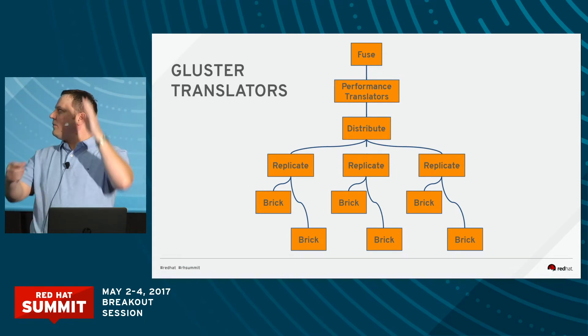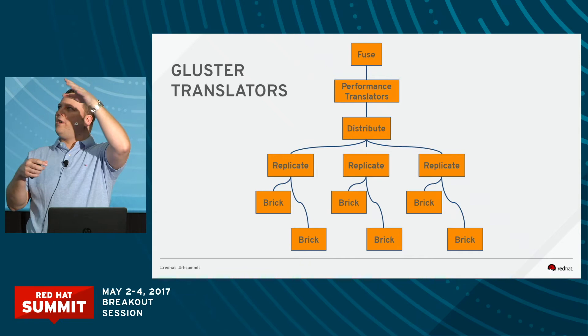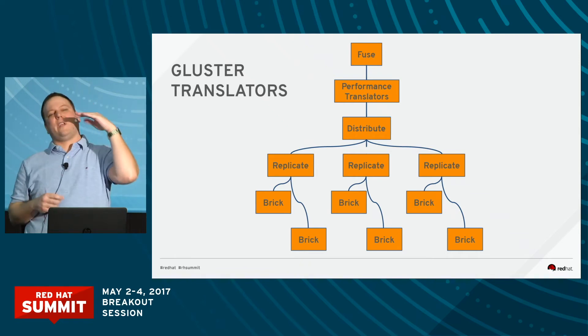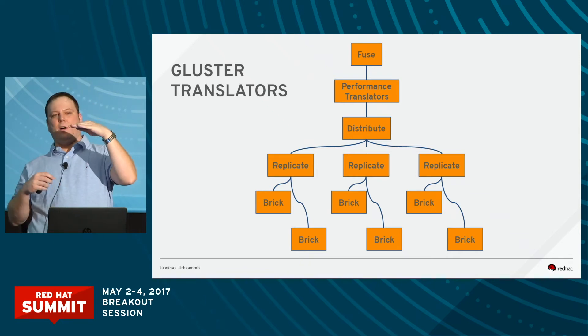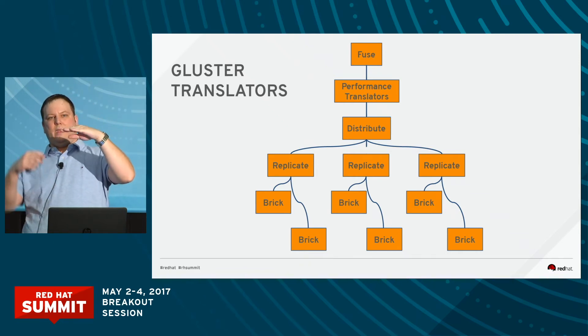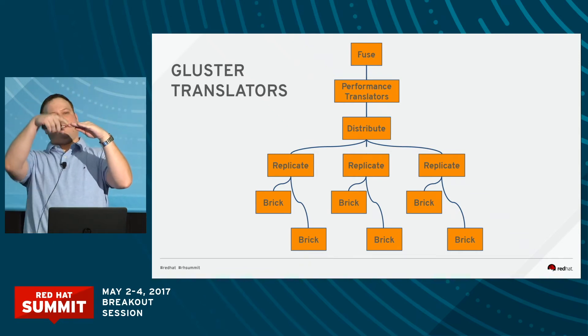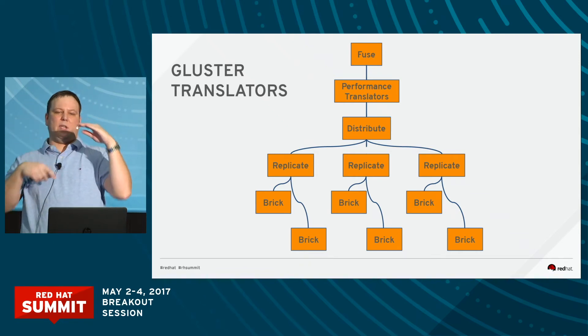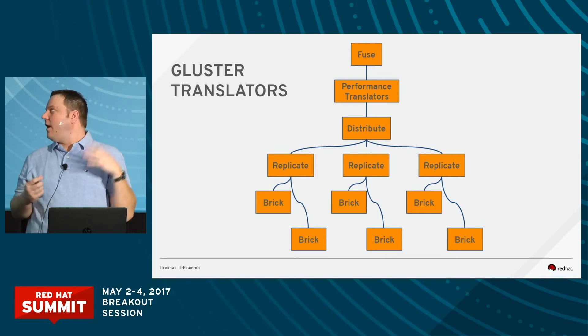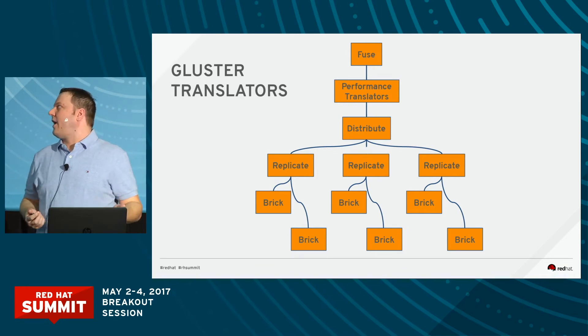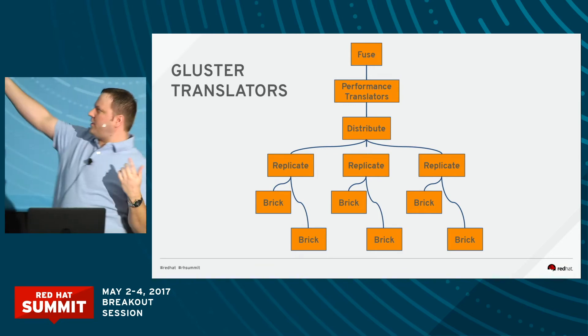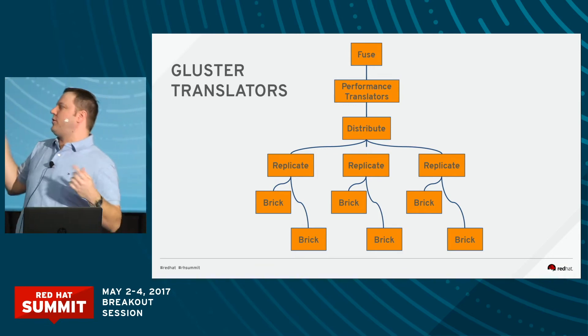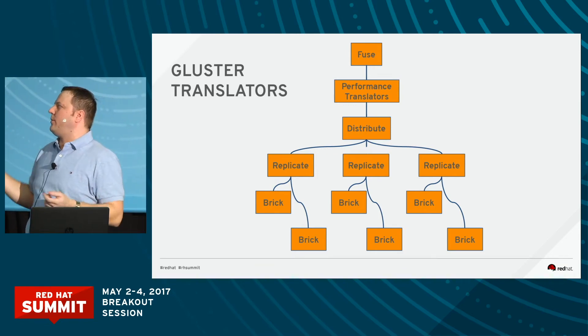Gluster takes a system call and it passes the system call through each layer in the translator stack. So you can see Fuse, performance translators, distribute.